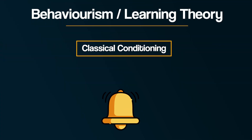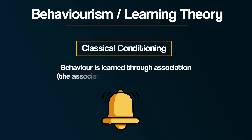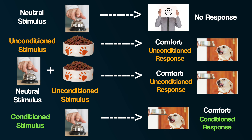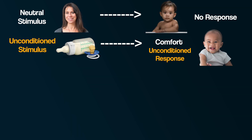Firstly, classical conditioning. This is the idea that behaviour is learned through association — the association of stimulus and response. You may remember this diagram and these key terms from the video on Ivan Pavlov and the behaviourist approach, linked below for you if you need a reminder. According to this theory, infants learn to associate the caregiver with the satisfaction of their basic needs.